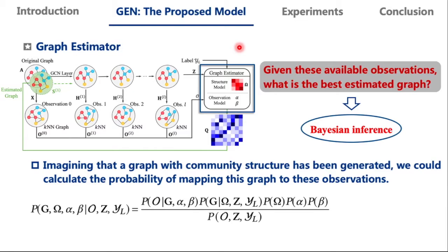These observations reveal the optimal graph structure from different perspectives, but they may be unreliable or incomplete, and we do not have a priori knowledge of how accurate any of the information is. So it is not straightforward to answer this question directly, but it is relatively easy to answer the reverse question.